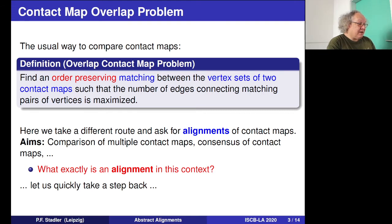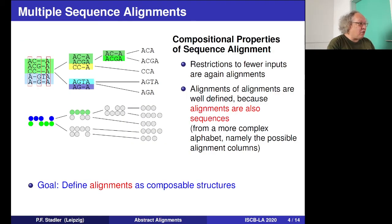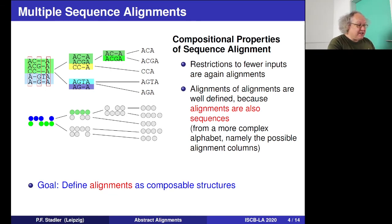In order to address this, we need to convince ourselves that there is a reasonable way of defining alignments of contact structures. Let us step back and look at what alignments actually are. In multiple sequence alignments, they consist of columns, and one of the most important properties is that these columns, like the original sequences, are ordered. We can compose these alignments both horizontally and vertically, and extract sub-parts by restricting to a subset of columns.